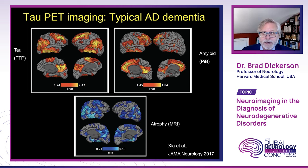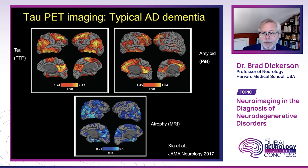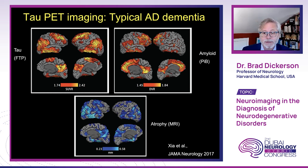Here's an example showing tau PET signal that is co-localized very strongly with atrophy in a patient with typical AD dementia. The amyloid PET signal is not co-localized with atrophy — amyloid tends to go to lateral and medial parietal and temporal cortices as well as prefrontal cortices, which is not typically affected in the early stages of Alzheimer's disease. Whether we look at hypometabolism or atrophy, the localization of tau PET signal strongly overlaps with where we see neurofibrillary tangles in the brain.